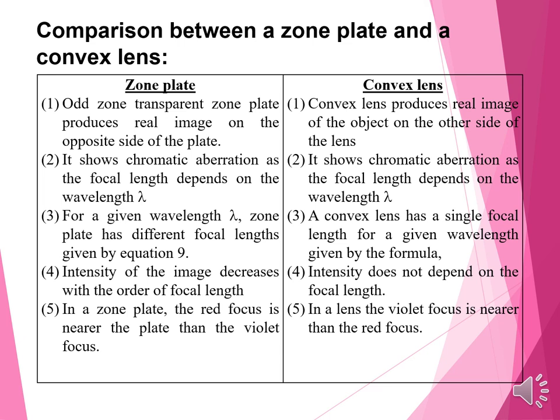The last comparison: in a zone plate, the red focus is nearer to the plate than the violet, meaning fr is less than fv. In a convex lens, the violet focus is nearer than the red focus, meaning fv is less than fr. These are the main comparisons between a zone plate and a convex lens. We will see further in the next lecture. Thank you.